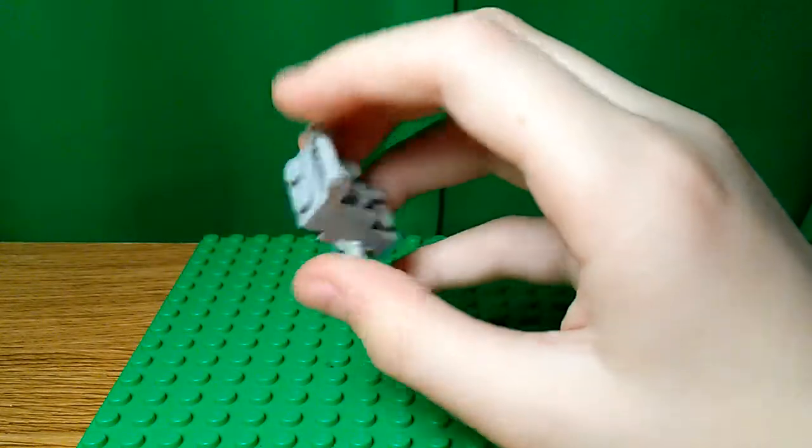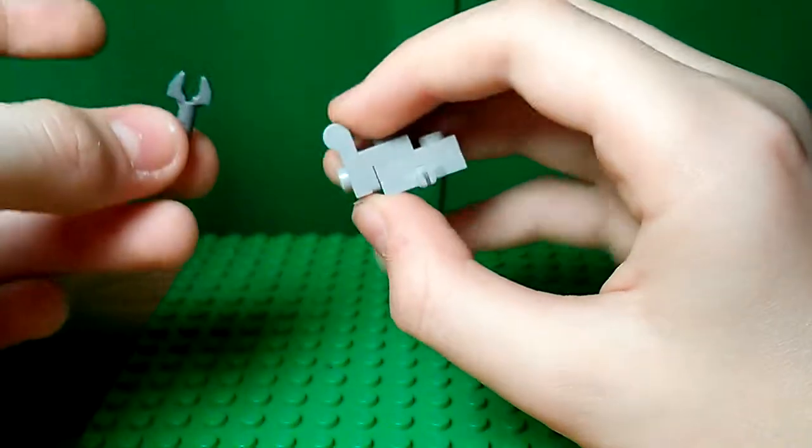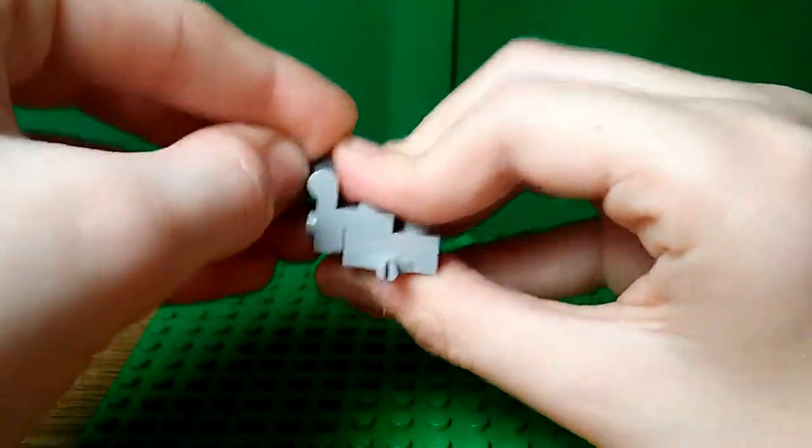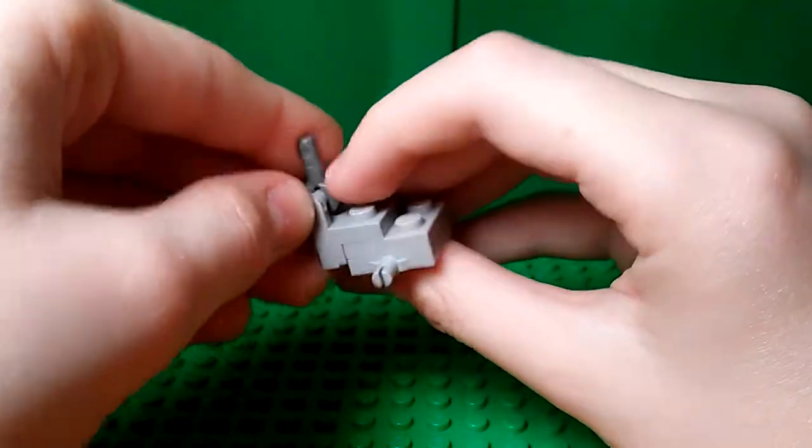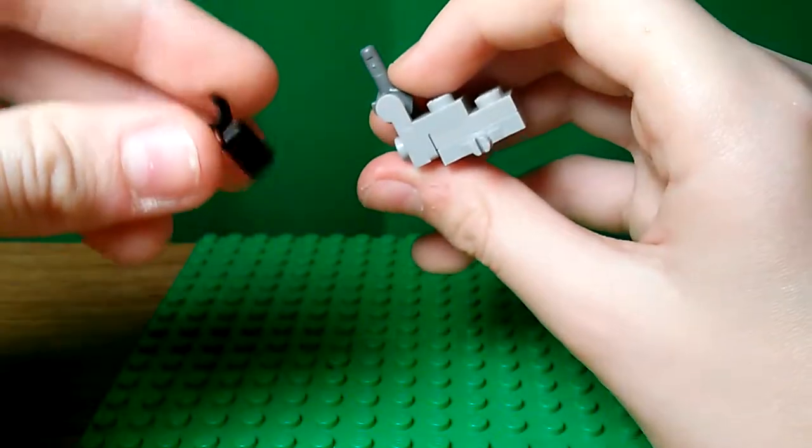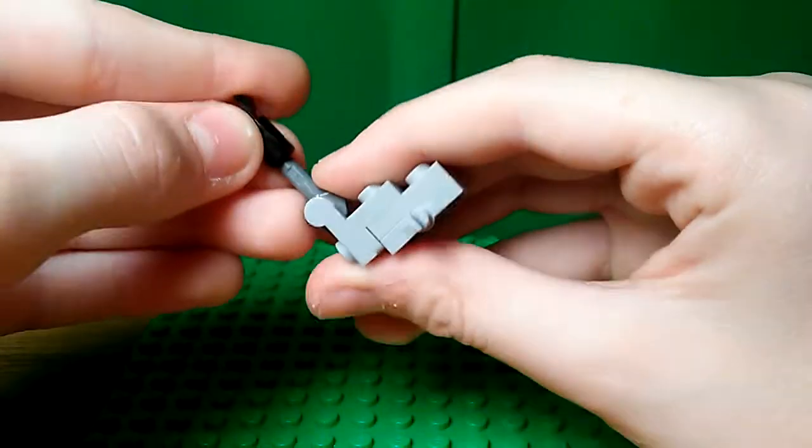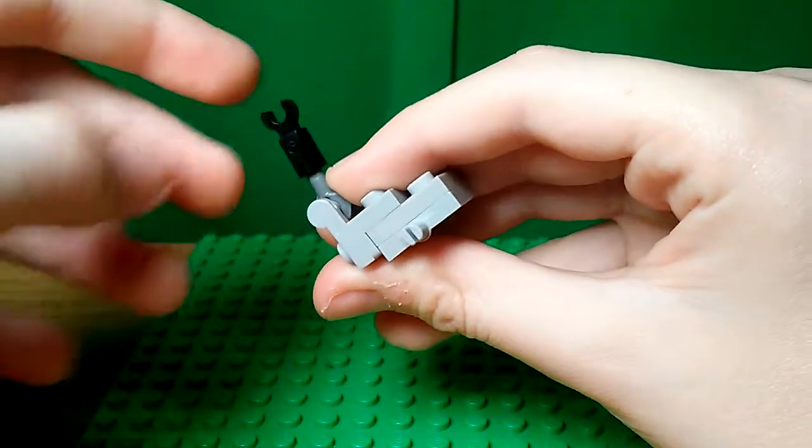And then here you take a dark gray wrench piece. Well, looks like a wrench. And then you take one of these little pull sockets with a clip on the back.